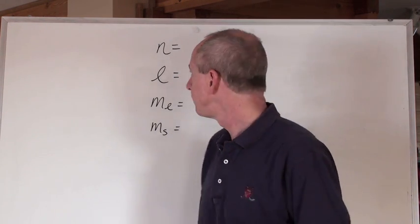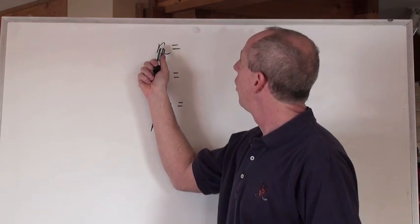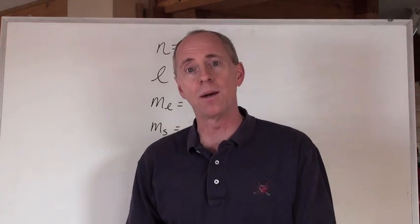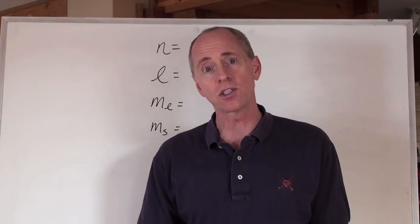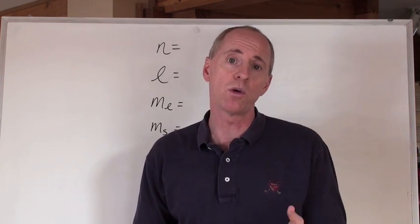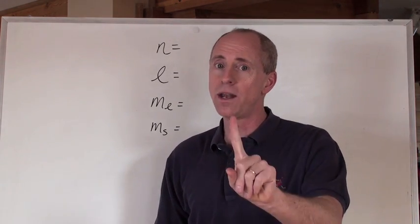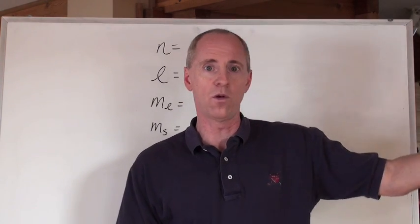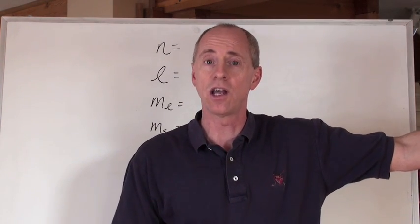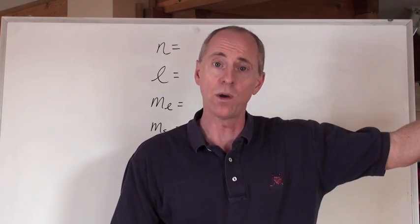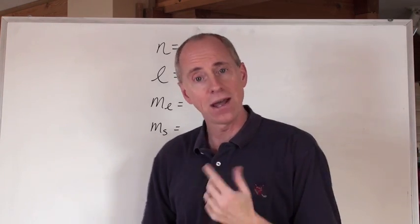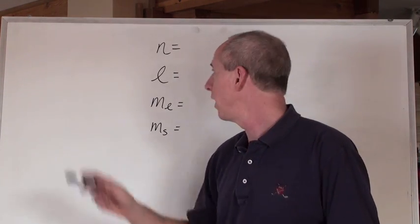Well, we call the first one the principal quantum number. That's just the energy level where the electron is. And so that principal quantum number n starts at, not zero, n equals one, and can go n equals two, three, four, five, six, and so on, in whole numbers going up from one. And that describes the energy level of the electron.